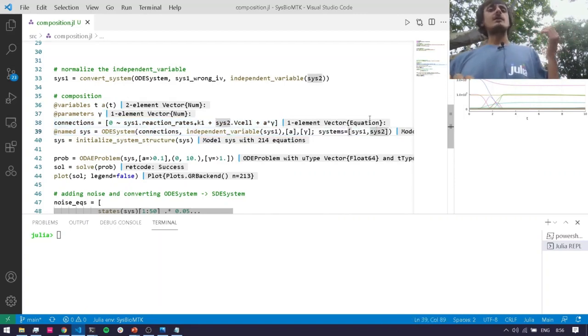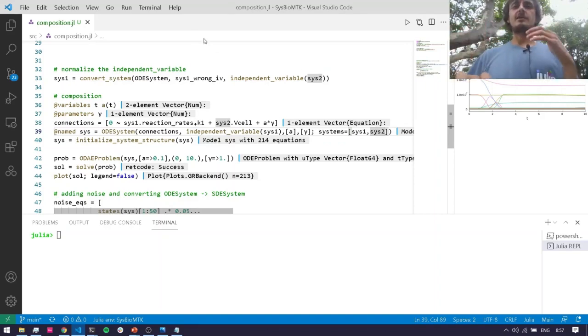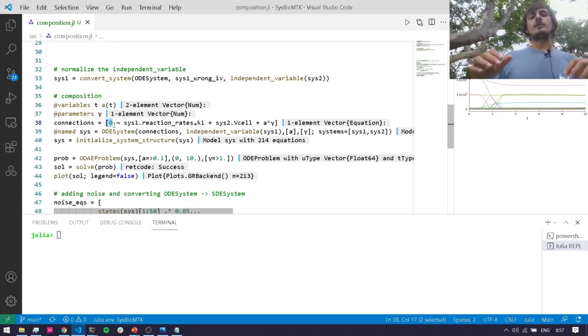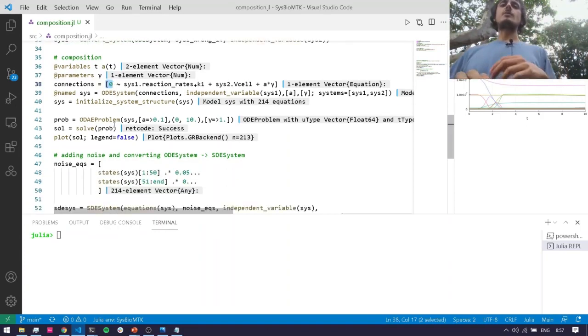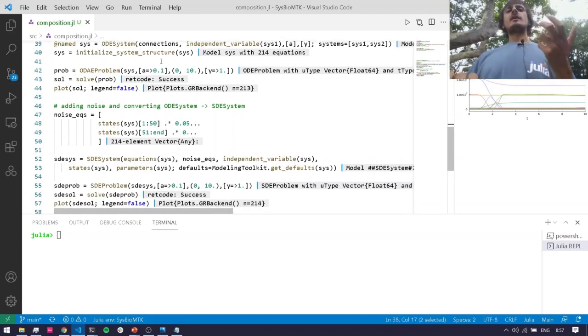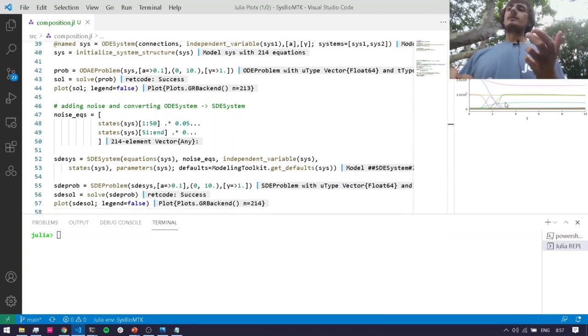If I were a real modeler, I would understand that this connection means like the blood going out of the lung is equal to the blood going into the heart or something like that. As the modeler, you would be doing that kind of work. Then I solve my problem and I get a plot that looks like this.